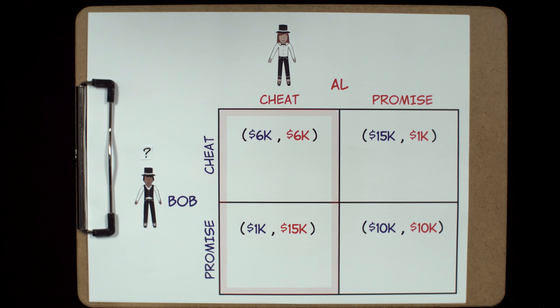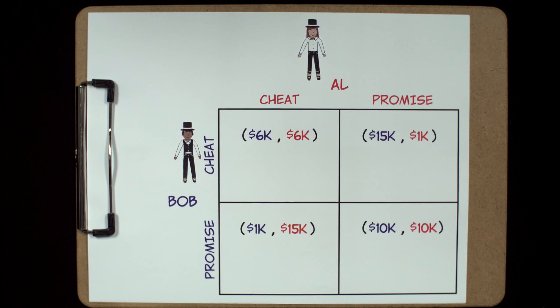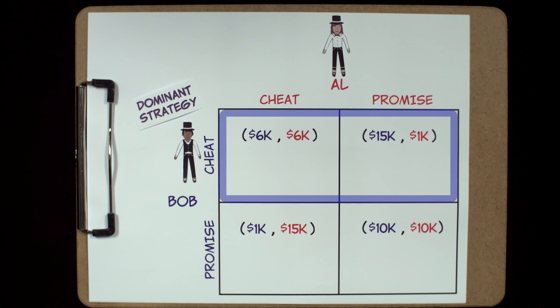Now, what if Al backstabs Bob and performs five shows? Bob's best strategy here is also to perform five shows a week and make $6,000 versus performing once a week and making only $1,000. Given that Bob's best strategy is to cheat and perform five shows, regardless of what Al does, cheating is his dominant strategy.